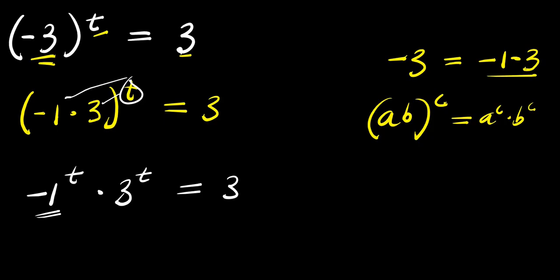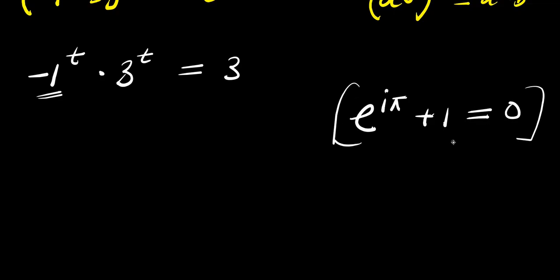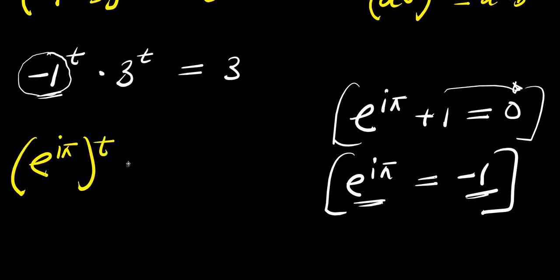So we have negative one here, and we can make use of Euler's identity in order to eliminate this negative one. If you have e to the power of i times pi plus one, this equals zero — this is Euler's identity. From here, e to the power of i times pi equals negative one. So I replace this negative one with e to the power of i pi. I have e to the power of i times pi, raised to the power of t, times three raised to the power of t, equals three.